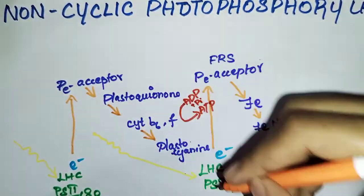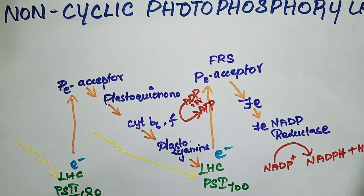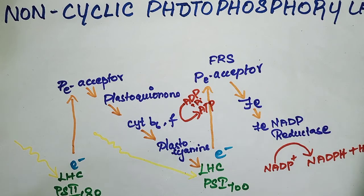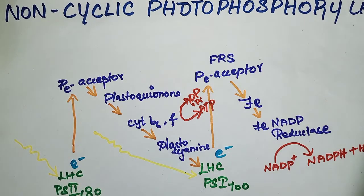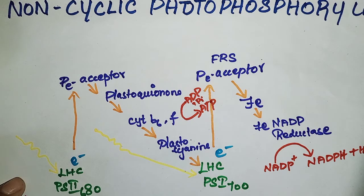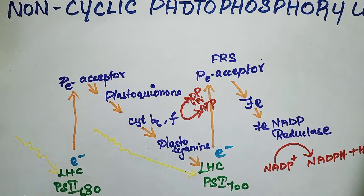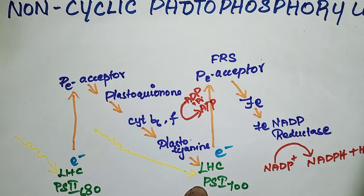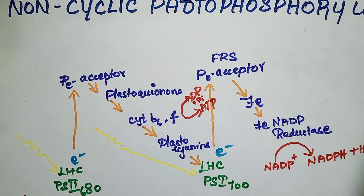So this is our non-cyclic photophosphorylation. Now, if here the electron is removed, then here also a hole is created and it also should be filled. So that is where PS2 complex has a special role — the splitting of water.